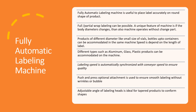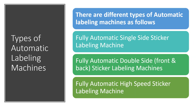They are valid for different types of container systems and different materials like glass, plastics, and aluminium. The labeling speed is automatically synchronized with the conveyor speed to ensure quality. Push and press optional attachments are also available. They also have adjustable angles for labeling heads, which is ideal for tapered products — products with long necks or tapered shapes. In current circumstances, fully automatic machines are being used for different types of self-adhesive labels, MPOs, vials, and different types of assemblies, since they operate at a very high speed.